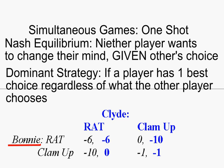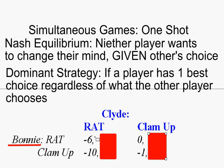I've put red boxes on top of Clyde's numbers so they don't distract us — this is something you can do as you're analyzing a game like this. Now this helps us clearly see that if we ask Bonnie: if Clyde rats, meaning we're here on the left side, what's your best choice Bonnie? Do you want to rat and go to jail for six years, or stay quiet and go to jail for ten years? Well Bonnie tells us that if Clyde rats, she wants to rat. So we put a little check mark there for Bonnie.